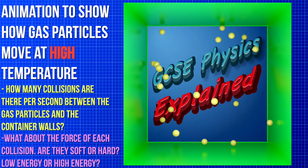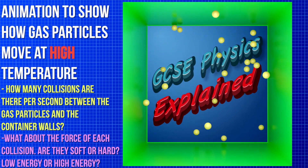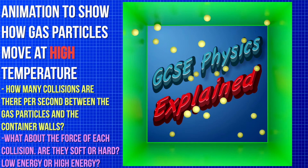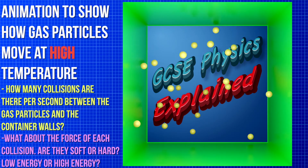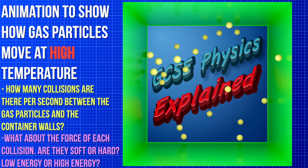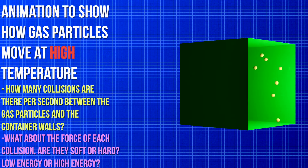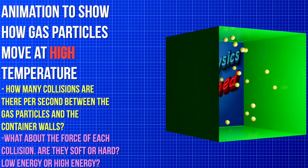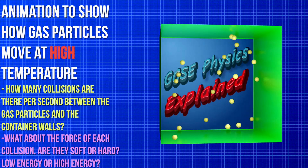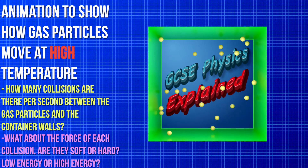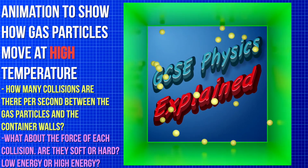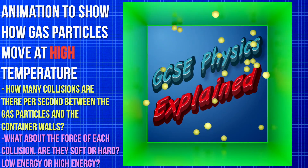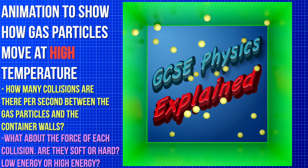Compared to the first animation, are there fewer collisions per second between the gas particles and the walls, or more? And what about the force of each collision? Are the collisions softer or harder? More energy or less energy?